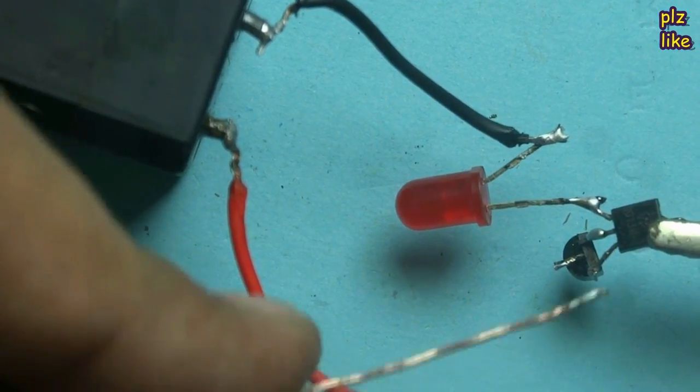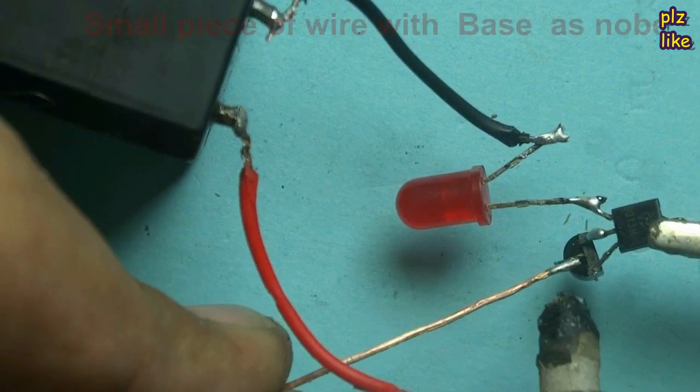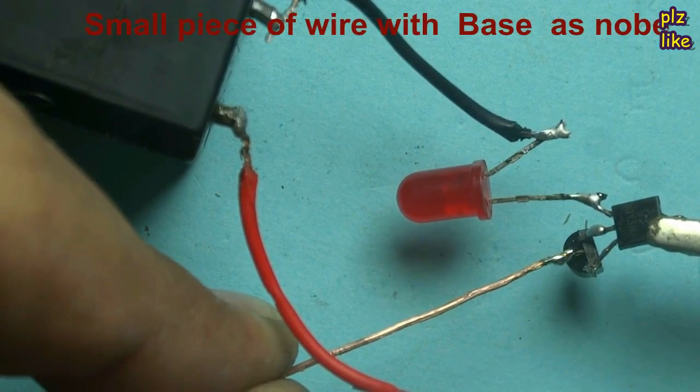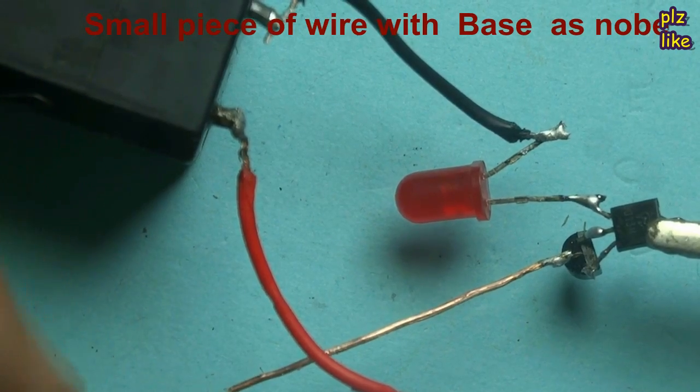A small piece of copper wire to the base point of the second transistor. I am using it as a knob.